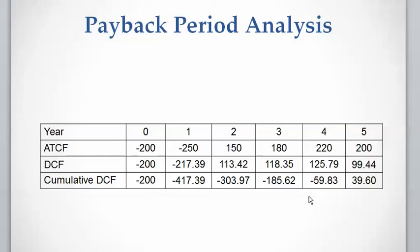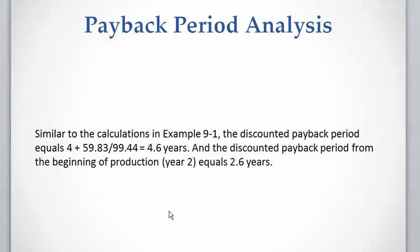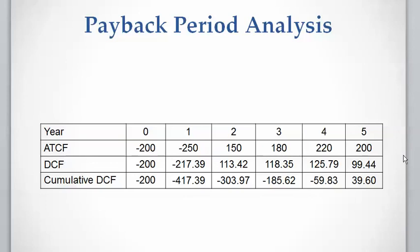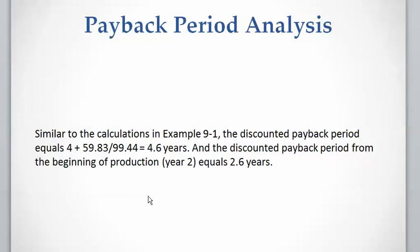As you can see, the sign of the cumulative discounted cash flow changes from negative to positive between year four and year five. So the discounted payback period is four plus a fraction. The fraction equals the cumulative discounted cash flow at year four divided by the difference between the cumulative discounted cash flow at year five and year four, which equals the discounted cash flow at year five. This gives us 4 plus 59.83 divided by 99.44, which equals 4.6 years for the discounted payback period.